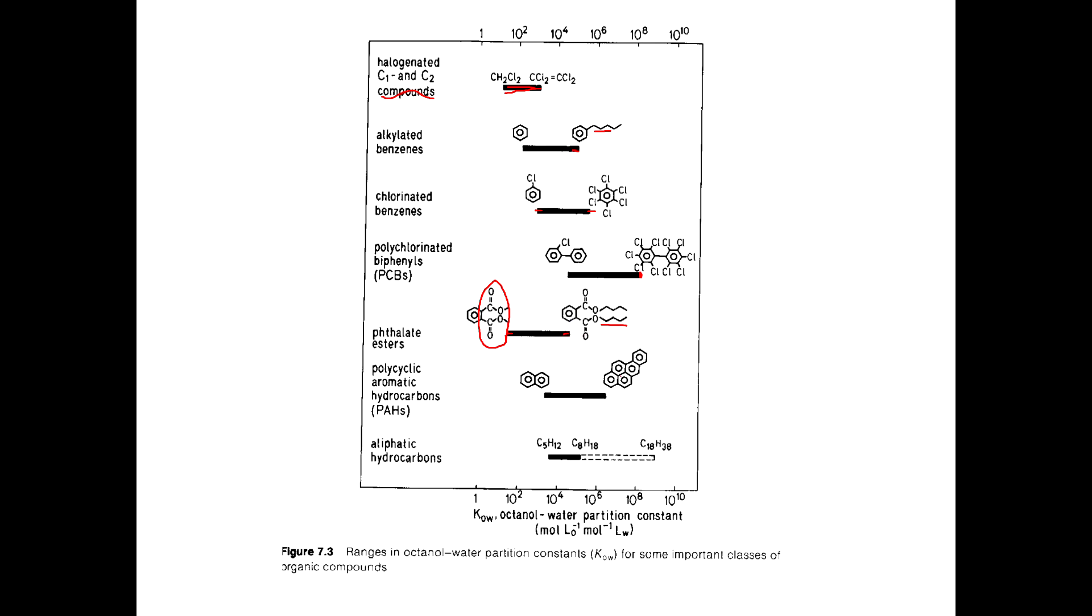Polycyclic aromatic hydrocarbons, around 10 to the 3 to 10 to the 7-ish for PAHs, so a little bit less hydrophobic than PCBs, but still pretty hydrophobic. And then you have your straight chain alkanes that can run the gamut. Totally nonpolar, so they have a relatively high KOW value for their size. I mean, they've got only 5 carbons here, but still a KOW of around 10 to the 4th or so.